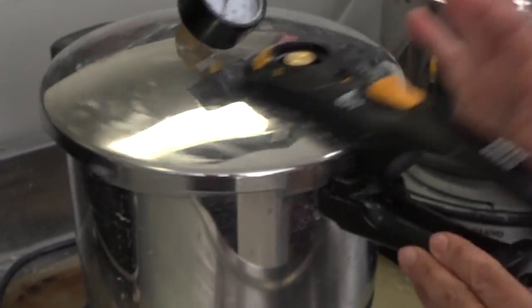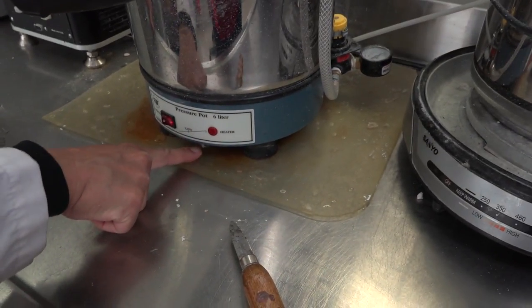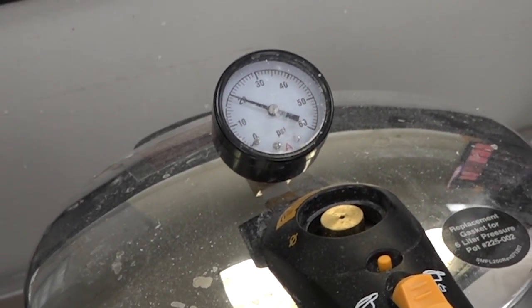Place into pressure pot set at a temperature of 120 degrees Fahrenheit, pressure set at 20 pounds per square inch. Give it 25 minutes for it to cure.